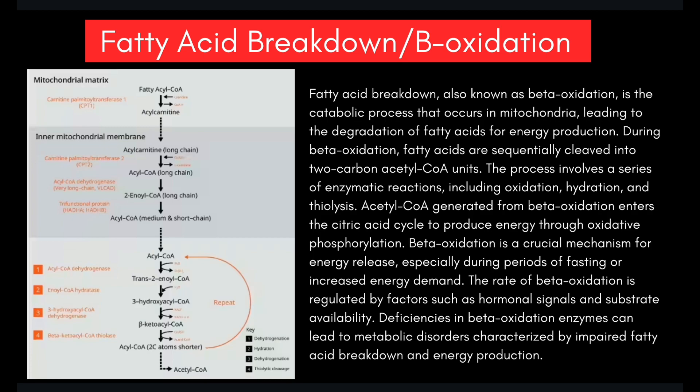Acetyl-CoA generated from beta oxidation enters the citric acid cycle to produce energy through oxidative phosphorylation. Beta oxidation is a crucial mechanism for energy release, especially during periods of fasting or increased energy demand. The rate of beta oxidation is regulated by hormonal signals and substrate availability. Deficiencies in beta oxidation enzymes can lead to metabolic disorders characterized by impaired fatty acid breakdown and energy production.